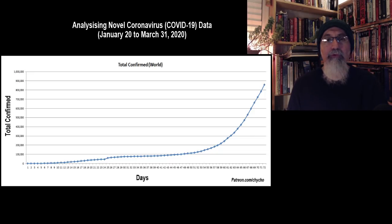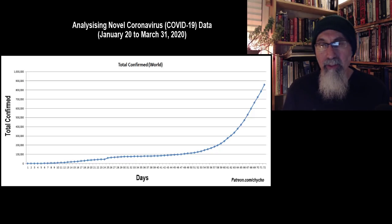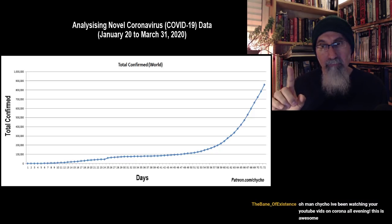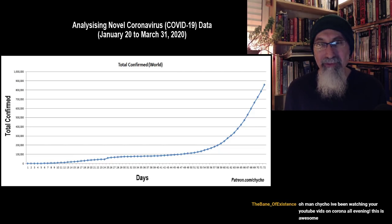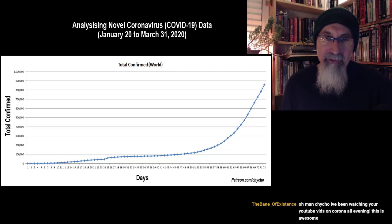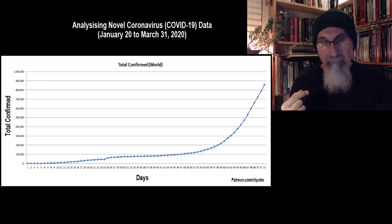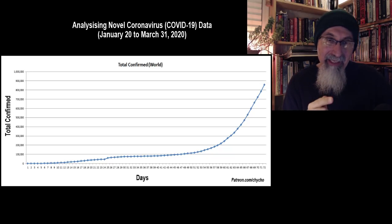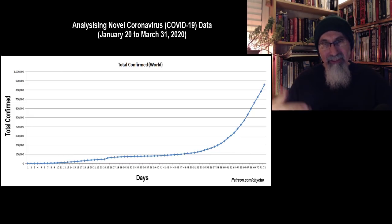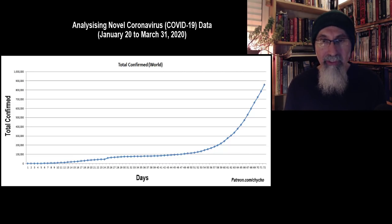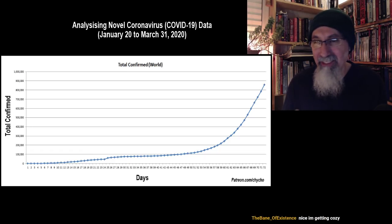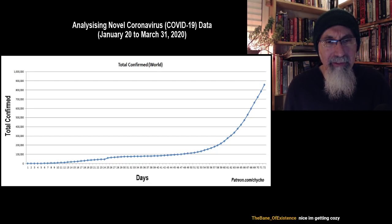The first graph is total confirmed worldwide — that's a pretty steep slope. We're looking at the data all the way to yesterday, from January 20th to March 31st. I had to wait last night until the data became available to enter it into the table, and I put all the graphs together today. You can't do it beforehand — you've got to include all the data.